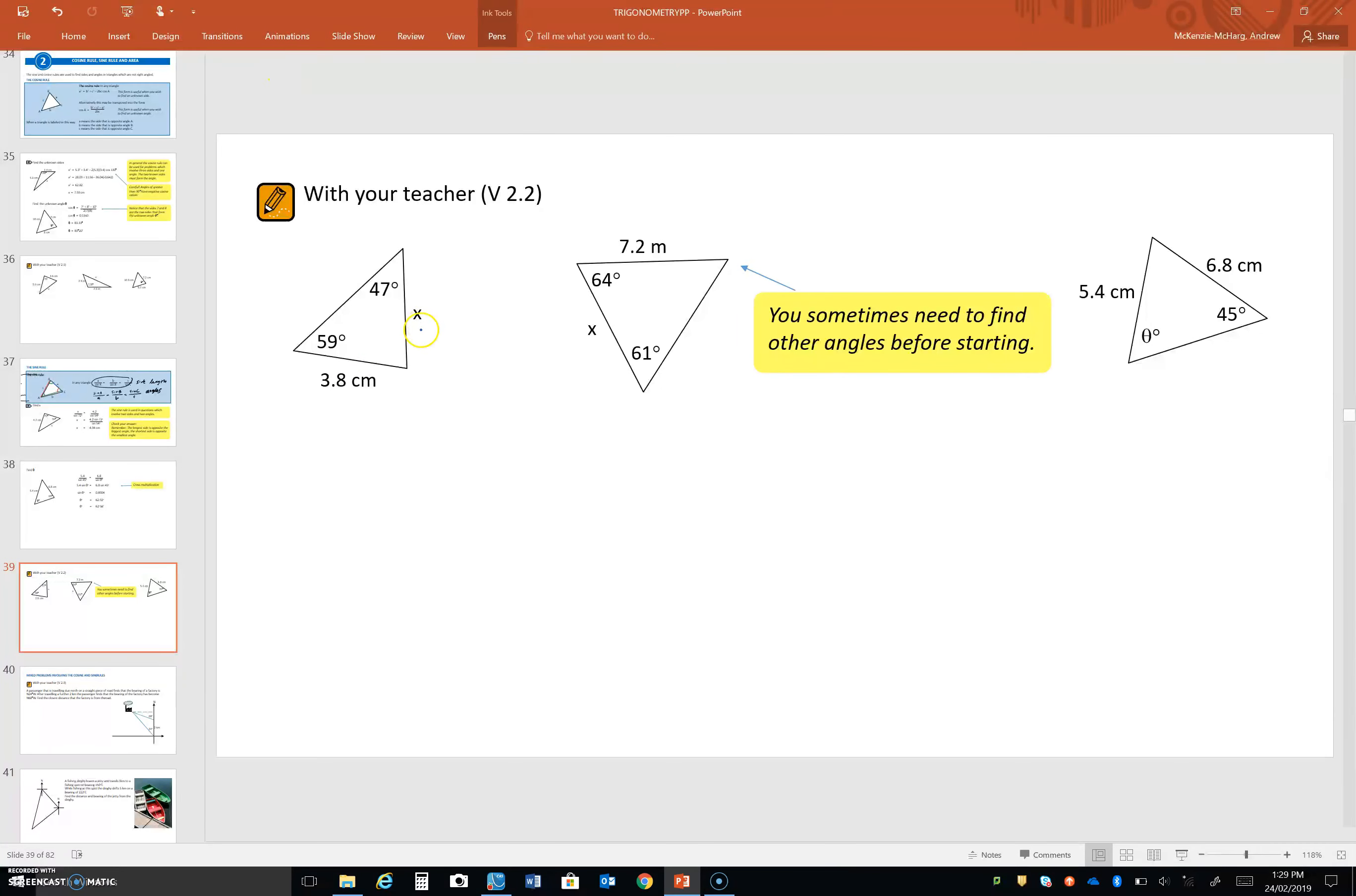So, if we know that if we take x and divide it by the sine of this angle here, that is going to be equal to this side length divided by the sine of that angle. That's what the sine rule tells us.